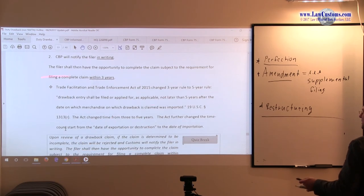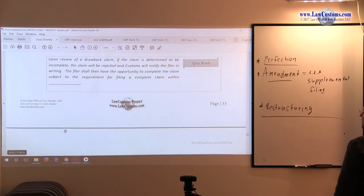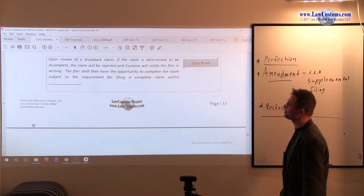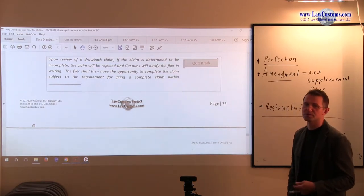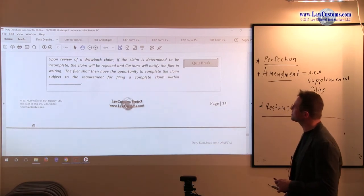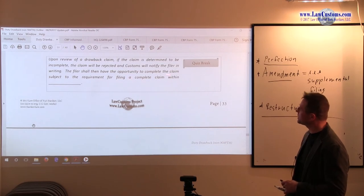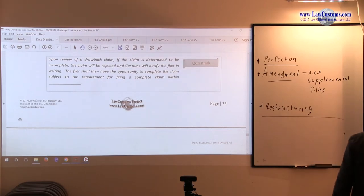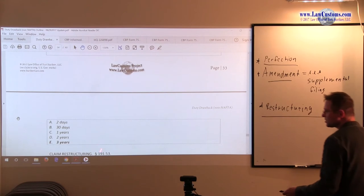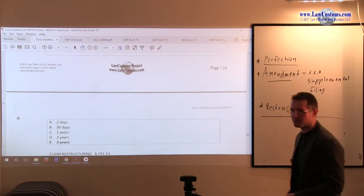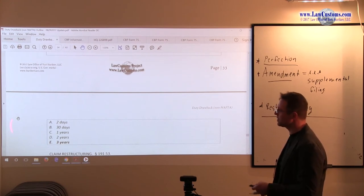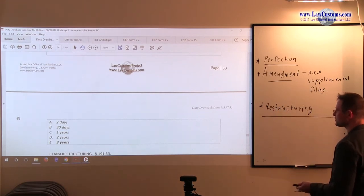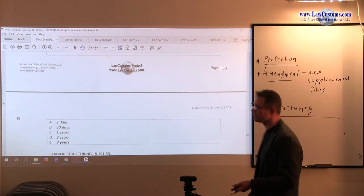Alright, so of course, Trade Facilitation and Trade Enforcement Act changed to five years from the date of importation. So you have this old rule and new rule dichotomy now. Question on point: Upon review of drawback claim, if the claim is determined to be incomplete, the claim will be rejected and customers will notify the filer in writing. So far it's a restatement of law. The filer shall then have the opportunity to complete the claim, subject to the requirement for filing a complete claim within blank. And here, the hint is statute of limitations. So you have three years statute of limitations, which is in section 191.51e, three years right on point. For this reason C is correct. All the other questions are incorrect. So this one you just have to know. Three years from the date of exportation or destruction.